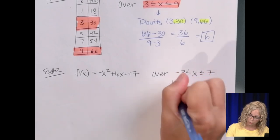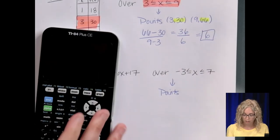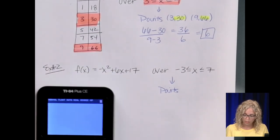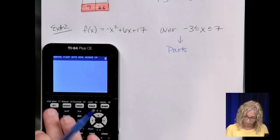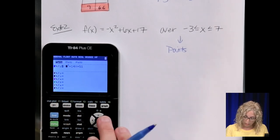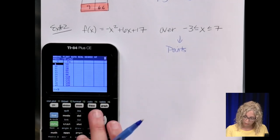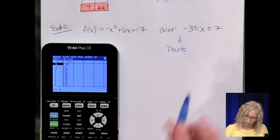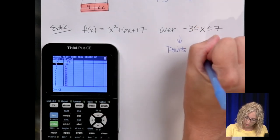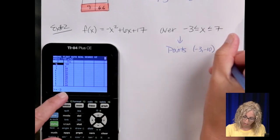The interval is negative 3, less than or equal to x, less than or equal to 7. So here, to get the points, we need a table, so the table is our calculator. So we have to type it in. Go to y equals, negative x squared plus 6x plus 17. Go to the table, find negative 3, so it's negative 3, negative 10, and where x is 7, 7, 10.